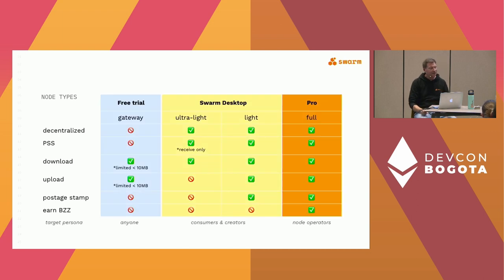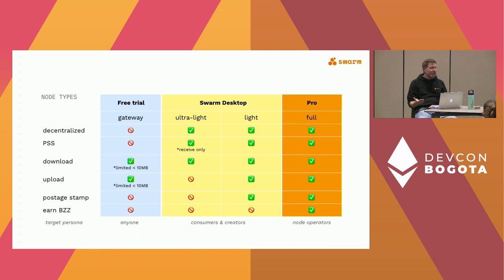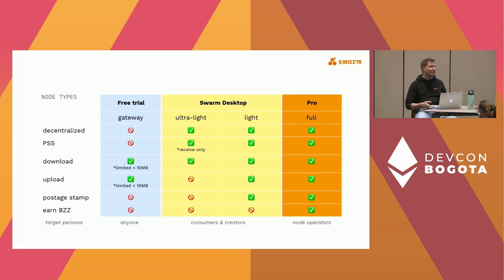To upload to the network, you have to pay for the data for someone to store it for you, and that's something you can do with a light node. If you want a web2-style view, there's a free trial on the gateway accessible from the browser — you don't need to install anything, you can upload and download data, but it's limited to a certain size. However, gateway operators must comply with the law and may need to remove some data, so censorship resistance cannot be guaranteed there.